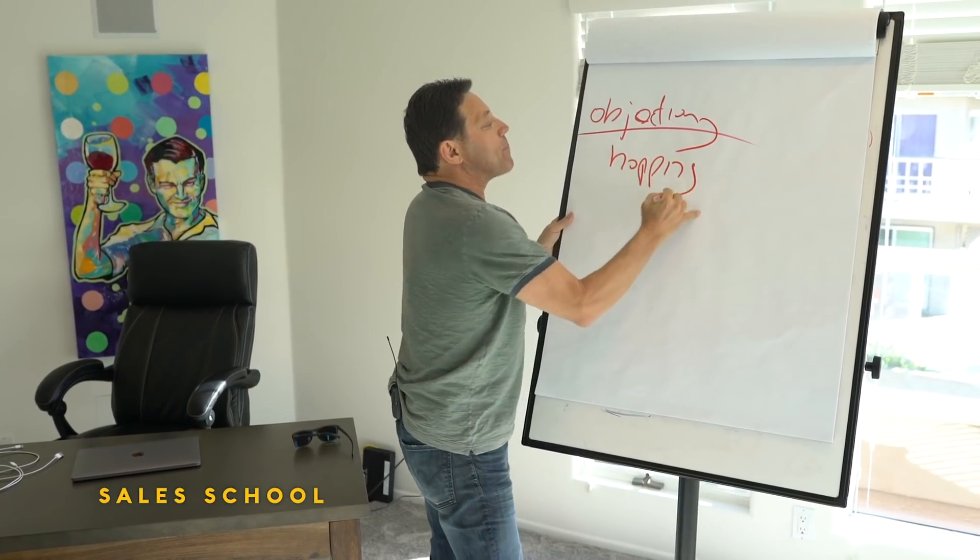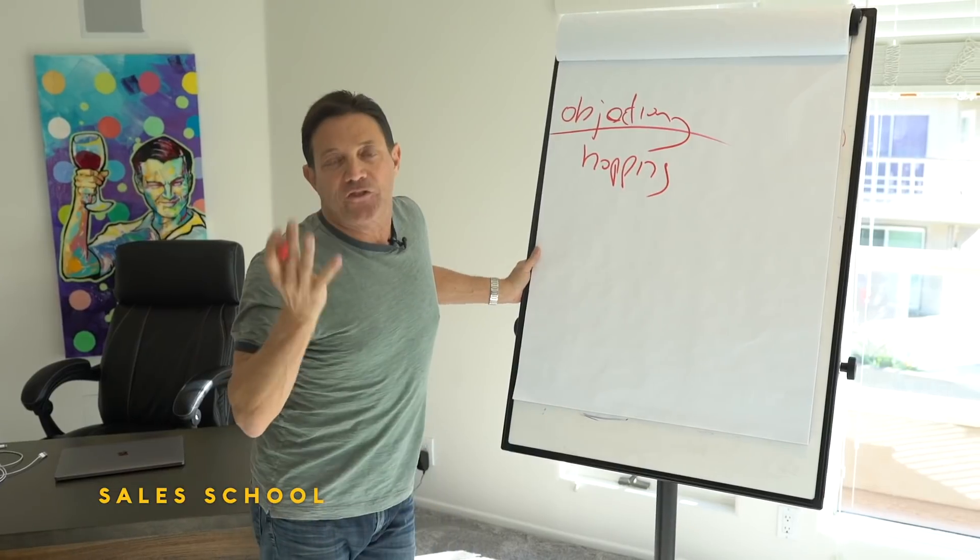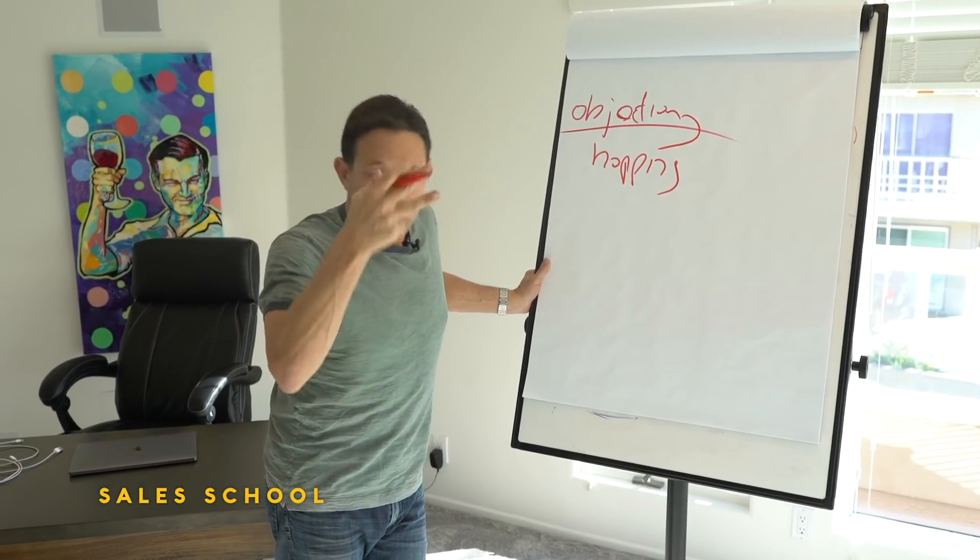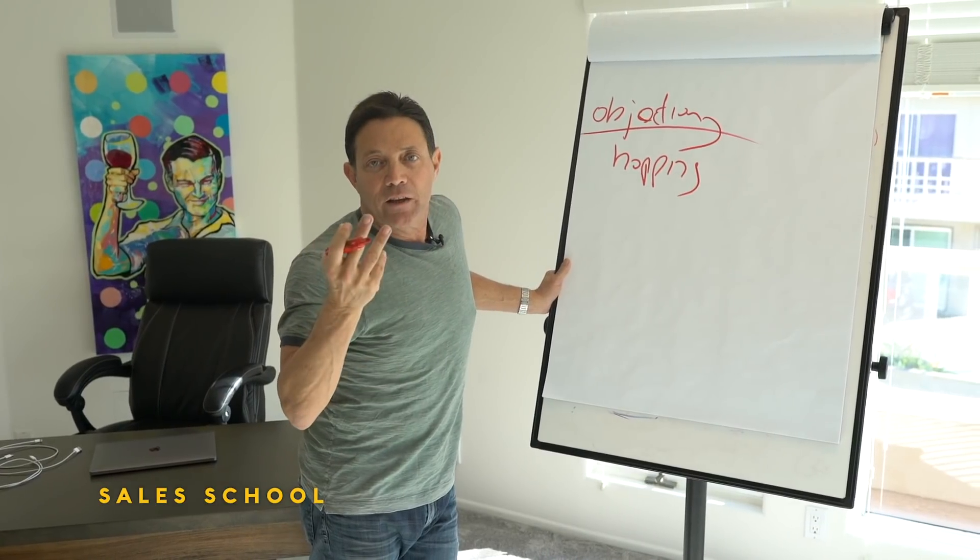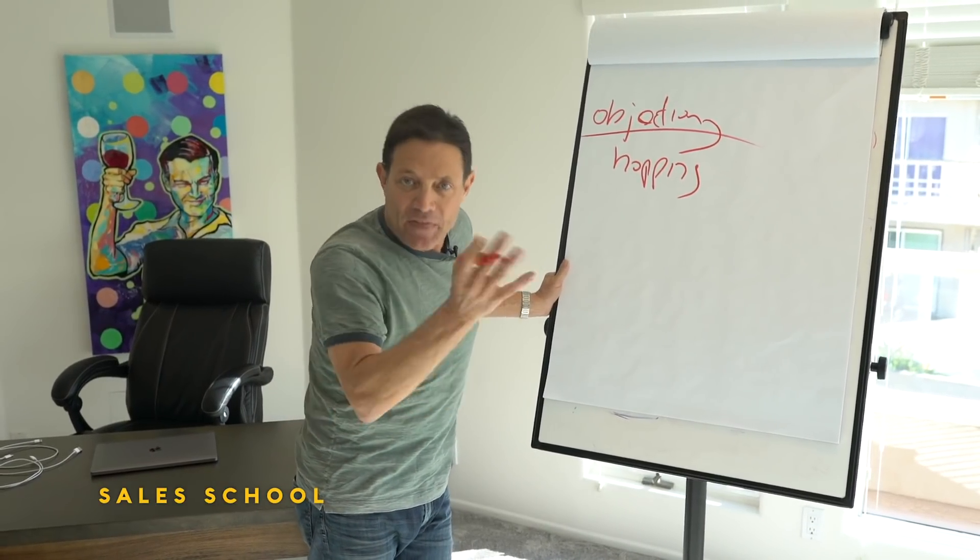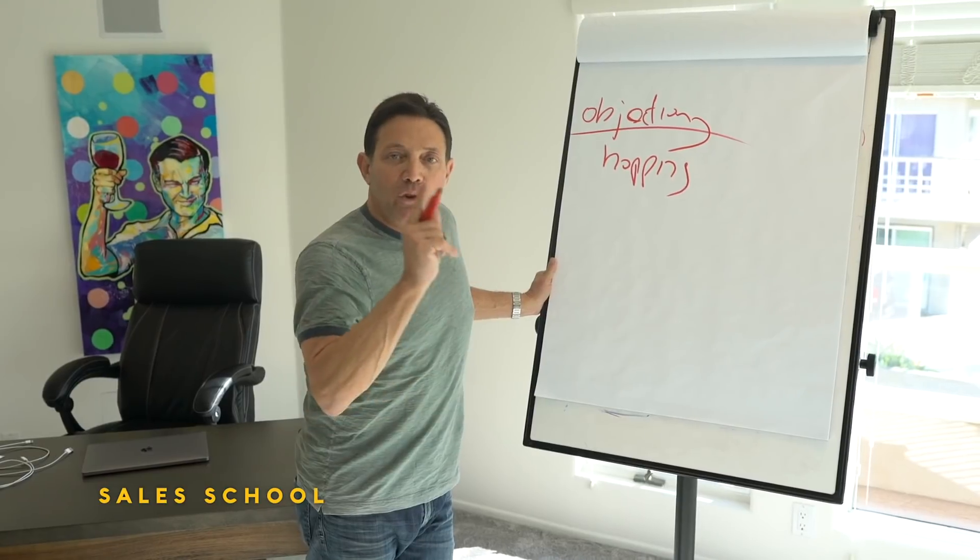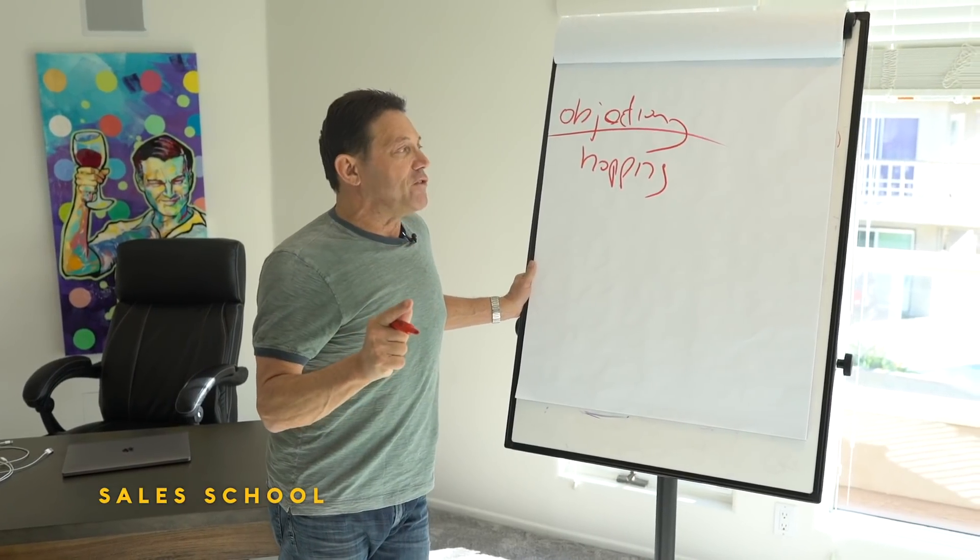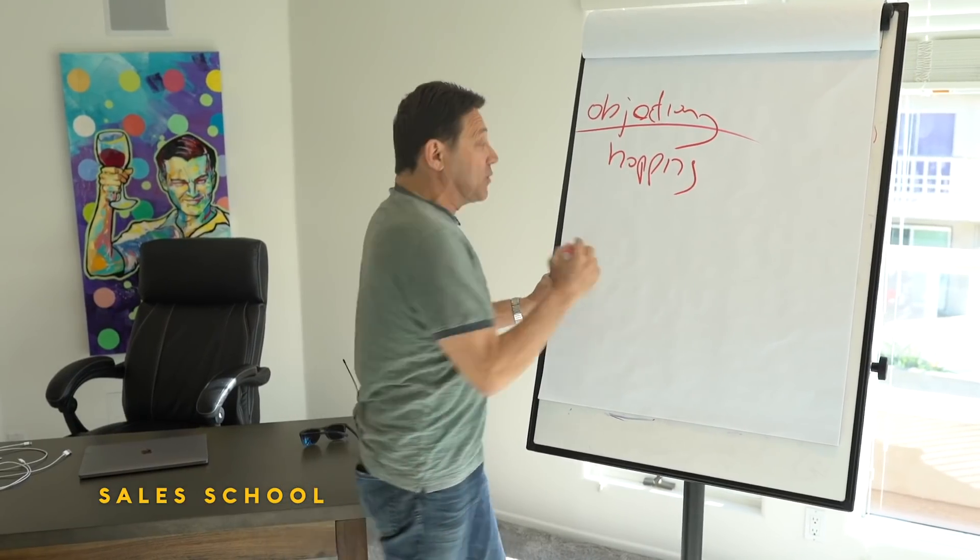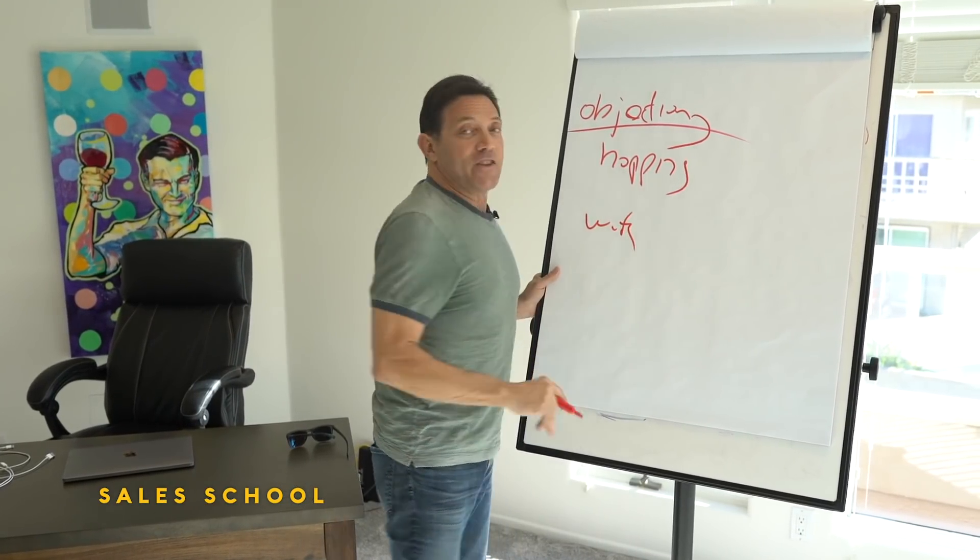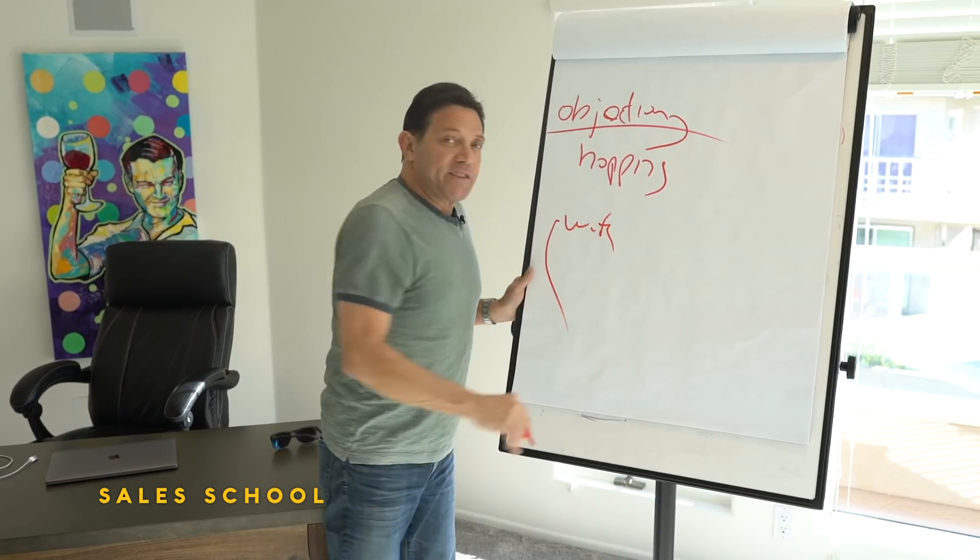What happens is when you answer an objection in the looping process, typically they'll start off saying yeah it sounds good Jordan, let me think about it. Then you run a loop, and then all of a sudden rather than having to think about it they say oh yeah, it really sounds great, I just got to talk to my wife.